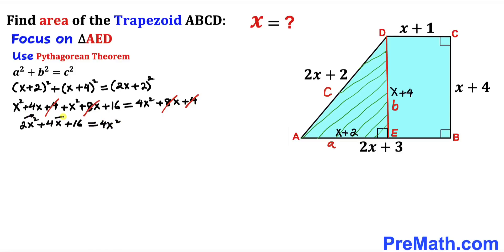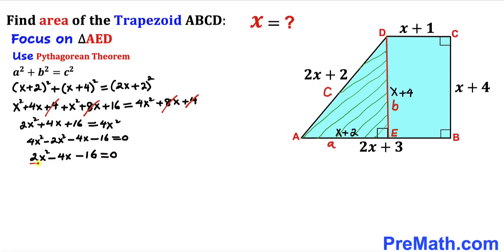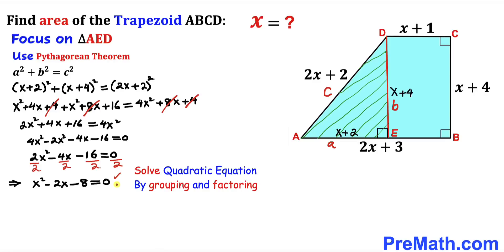Moving everything to one side: 4x squared minus 2x squared minus 4x minus 16 equals 0, which simplifies to 2x squared minus 4x minus 16 equals 0. This equation is divisible by 2 across the board, so dividing each term by 2 gives us x squared minus 2x minus 8 equals 0. This is our quadratic equation, which we will solve by factoring.